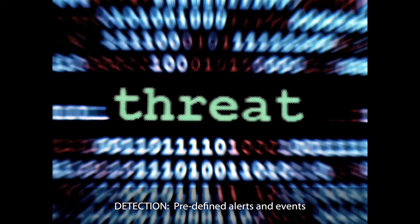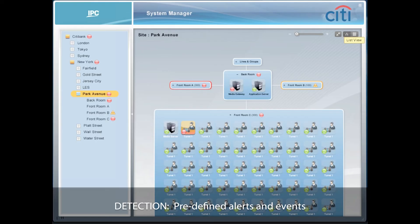Detection. In the financial services area and the healthcare area, there are lots of situations where things need to be detected. The approach we like to take in software is to have predefined ways to detect issues. Here's an example — this is a trading system used at Citibank. You can see the trading floors on the left-hand side, and at the Park Avenue trading floor in front room C, there is a trader who has an issue. This is predefined — people know to look at this screen and they know how the screen is going to work. It signals those events and alerts early so that people can respond.